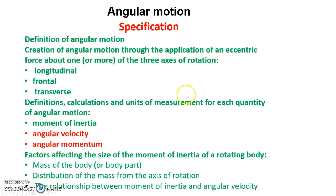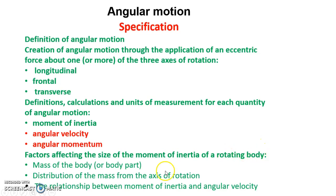We had a look last time at the following things in green. So last lesson or last screencast, we had a look at the focus of these definitions, creation of angular motion, axes, and we had a look at the calculations, definitions, and units of measurement for moment of inertia in particular. We also had a good look at factors affecting the size of the moment of inertia of a rotating body — key factors like mass, distribution of mass from the axes — and we had a real look at the relationship between moment of inertia and angular velocity.